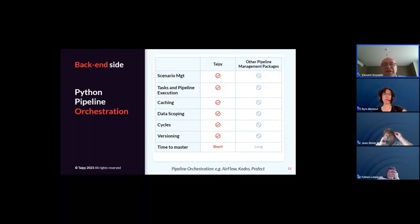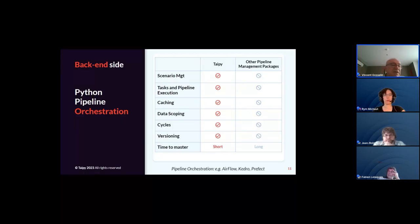On the backend side, you'll see scenario management — the capability to have different executions for your pipelines. We have pipeline orchestration, but we want to record every single run that the data scientist, developer, or end user runs. We want caching, different scoping for your data, versioning of your pipeline, and a very short learning curve — which we couldn't find in the marketplace.